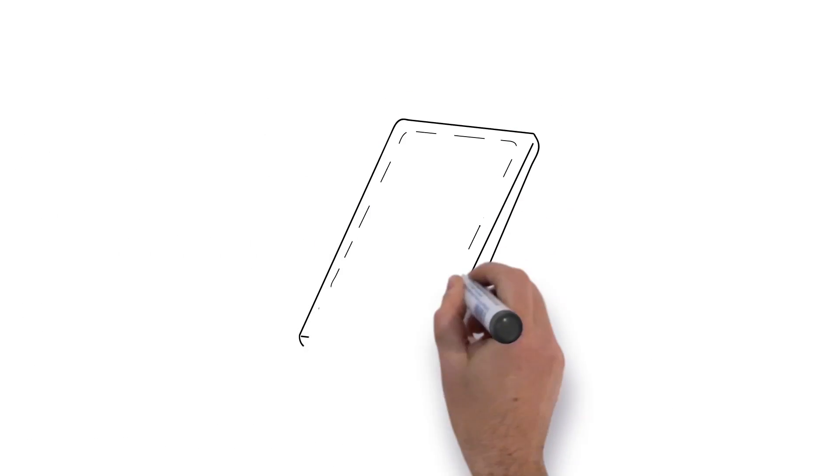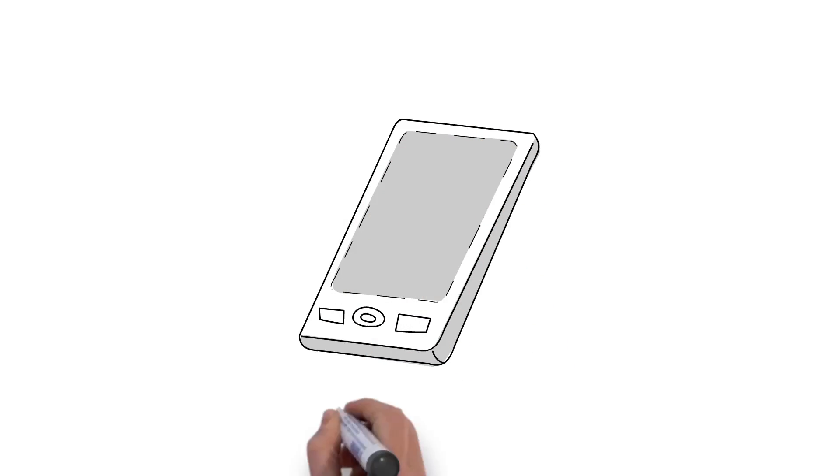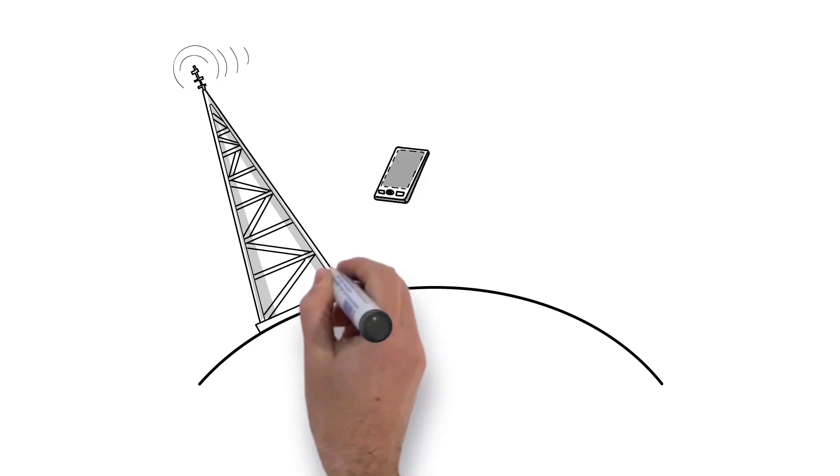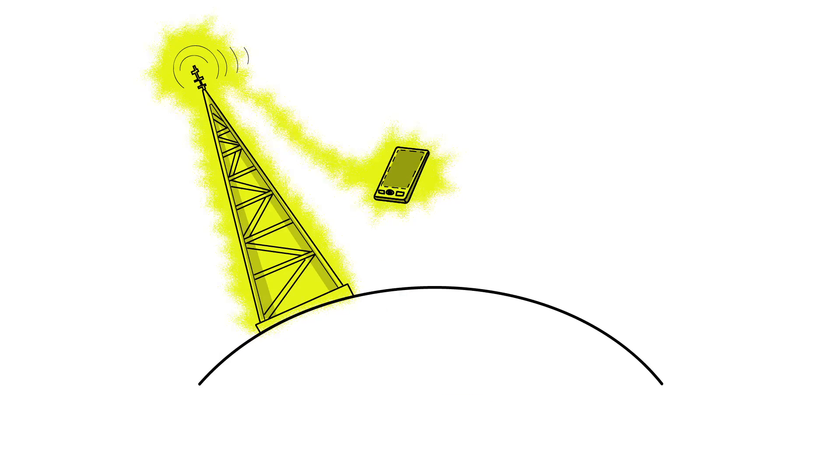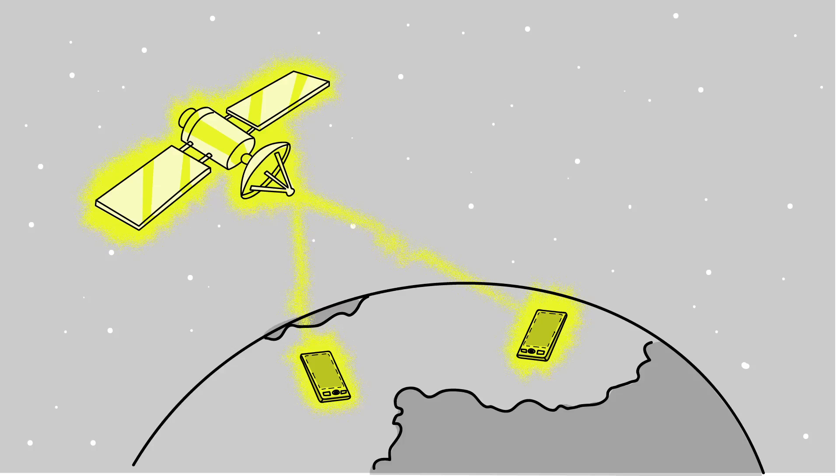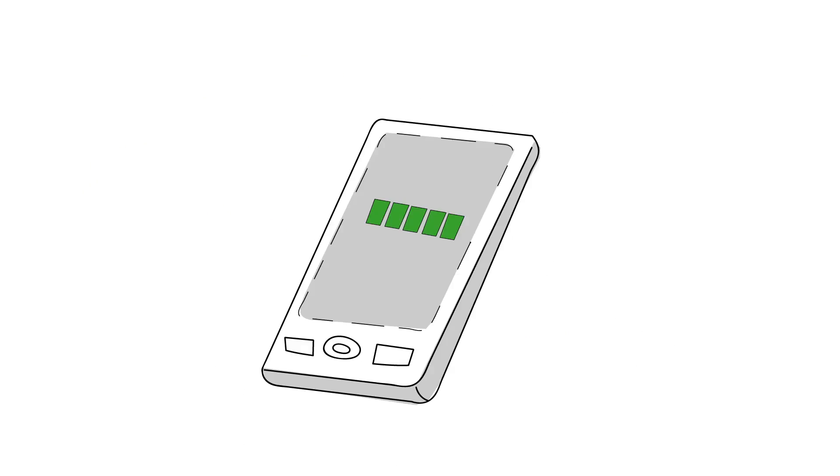Well, consider this. Your mobile phone is a line-of-sight radio. If mobile phone providers put their cellular radios near the ground, you'd have to be standing right beside them to make your call. So instead, they build tall towers or send satellites into space, giving you that full network bar connection.